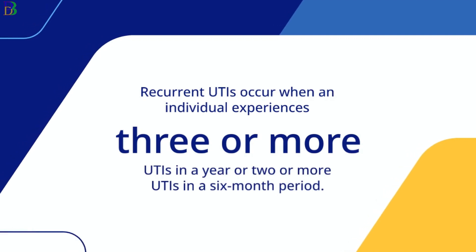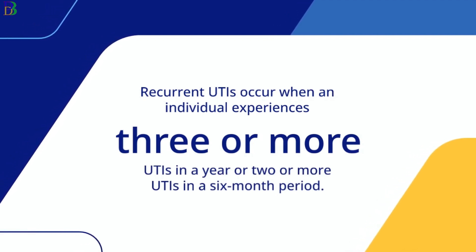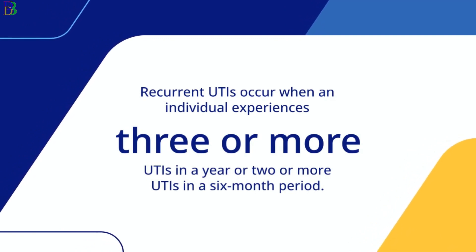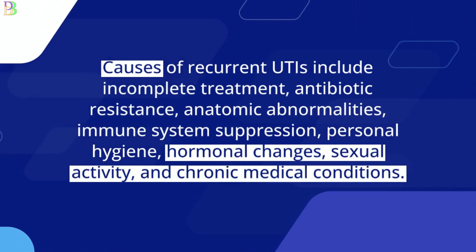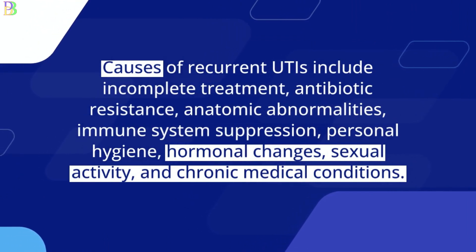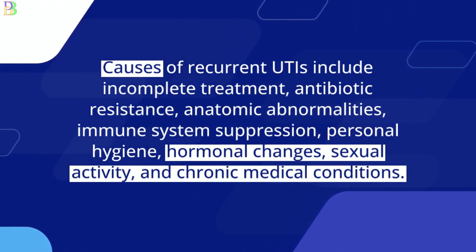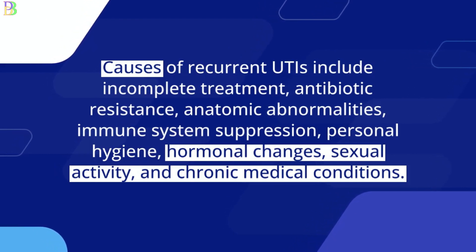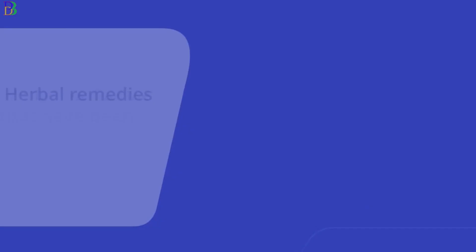Recurrent UTIs occur when an individual experiences three or more UTIs in a year, or two or more UTIs in a six-month period. Causes of recurrent UTIs include incomplete treatment, antibiotic resistance, anatomic abnormalities, immune system suppression, personal hygiene, hormonal changes, sexual activity, and chronic medical conditions.